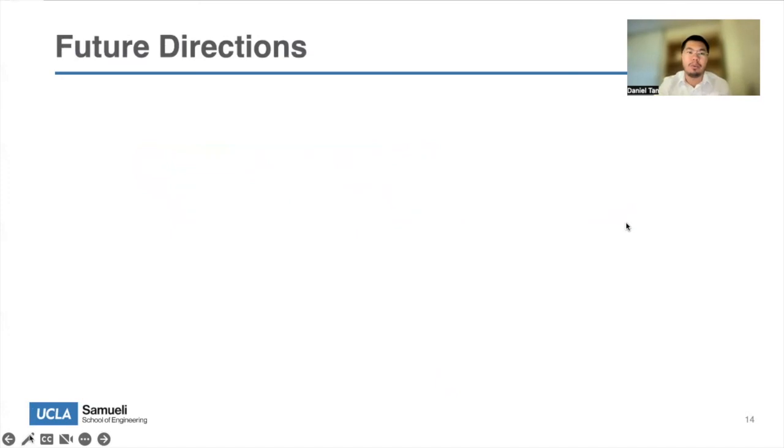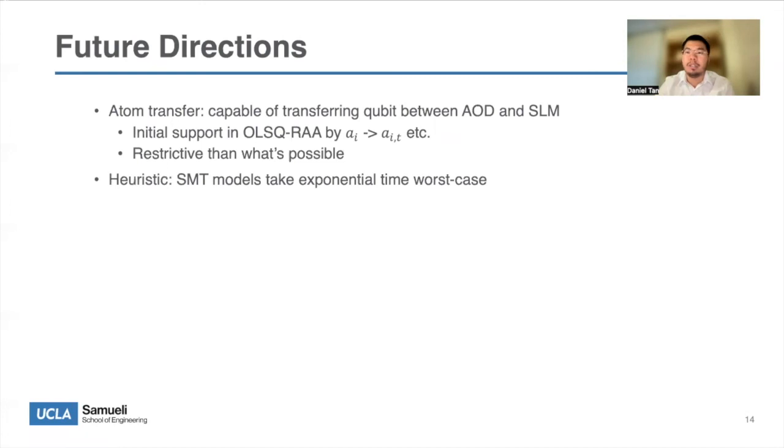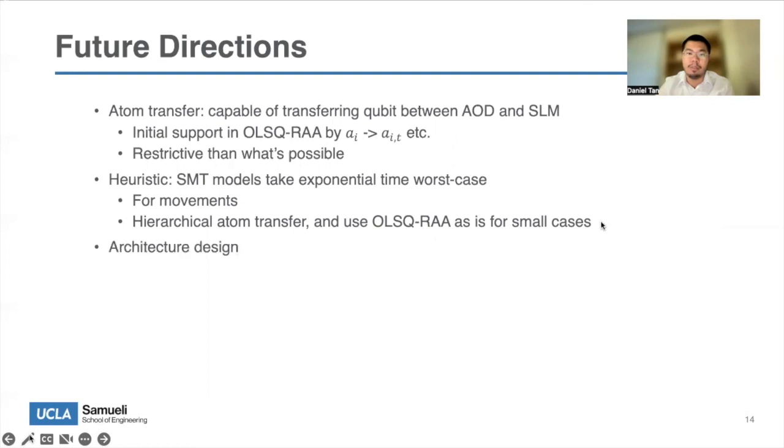For future directions, we would like to first handle this atom transfer capability better. So, that just means we are capable of transferring qubits between AOD and SLM. We have some initial support for this by expanding this AI type of variable to be time dependent, but it's still restrictive than what's possible. The second direction is developing heuristics, since we are getting some sense of what the solutions should look like. Also, because SMT models takes exponential time to solve in the worst case. So, these heuristics are forward AOD movements, but also another way is that we can develop some higher-order heuristics for performing atom transfer and then still use OSCRA as is for the small cases to perform the movements. And this optimal compiler will also be valuable for architecture design. Thank you very much. So, these are some references.